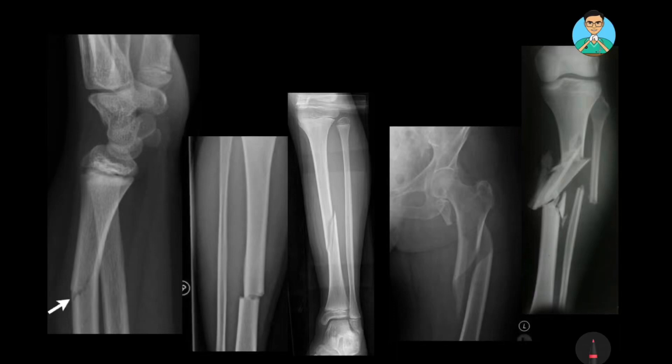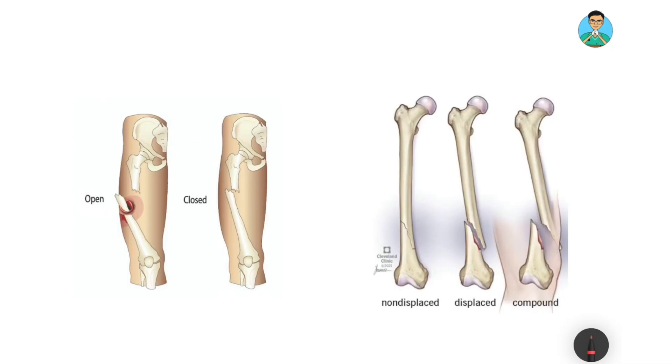Your orthopedics rotation will be all about seeing these black and white images over and over again. In these black and white images you will get to see a lot of fractures like these. But to understand these images, or to look beyond these images as a clinician or orthopedician, first things first — let us understand what is a fracture.